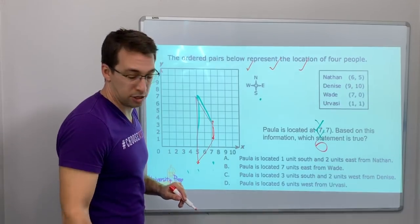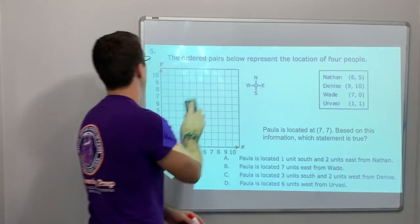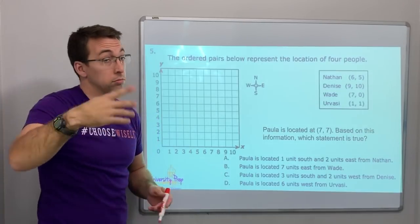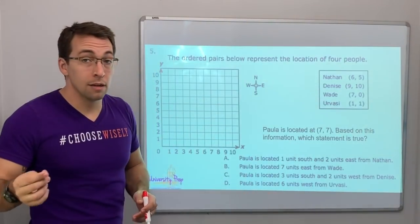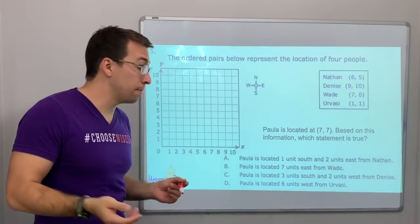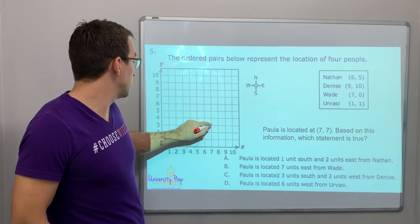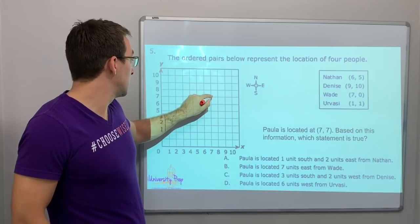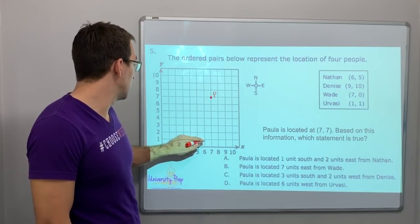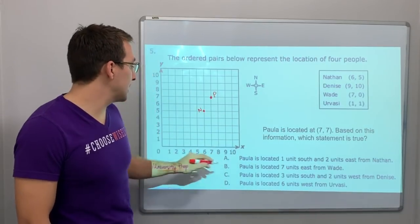Next, question five. The ordered pairs below represent the locations of four people: Nathan, Denise, Wade, and Urvasi. Paula is located at seven-seven. Based on the information, which statement is true? Let's plot Paula at seven-seven. Nathan is at six-five. Wade is at seven-zero.